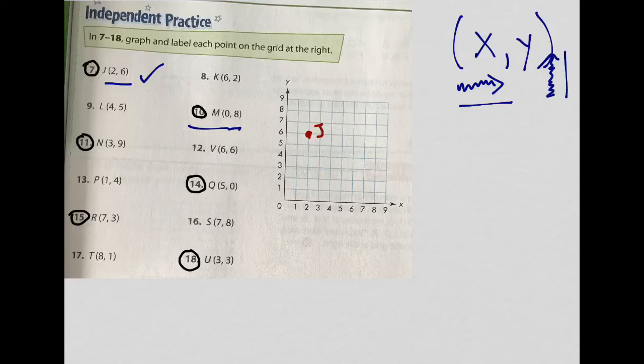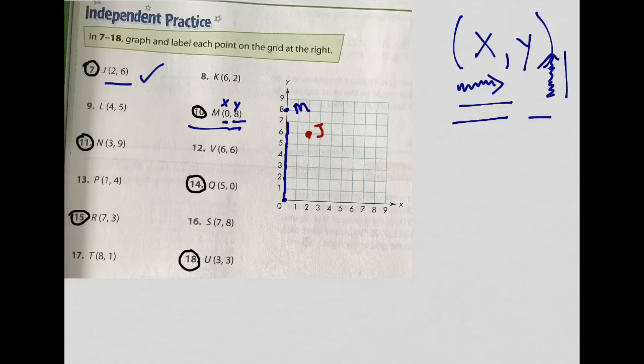Point M. Let's plot that. So remember, x first, then y. So x wants me to move zero. Alright, so I'm not moving at all. So I'm at the origin still. But y wants me to move 8, vertical. So 1, 2, 3, 4, 5, 6, 7, and 8. And I'm going to label that point M. Now, I am going to clean this up and do my next point. That one's done, which was M. And now I'm over here to N.